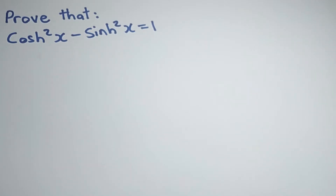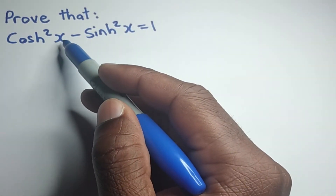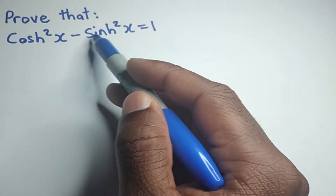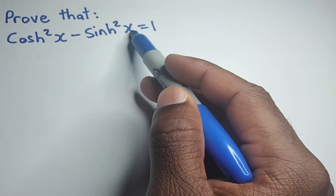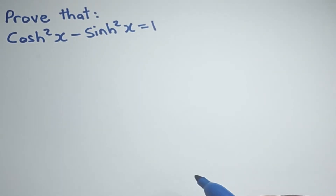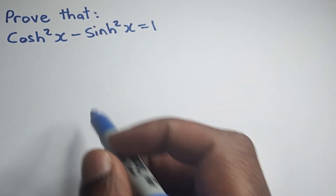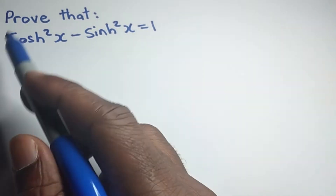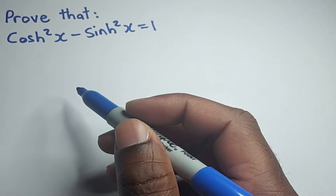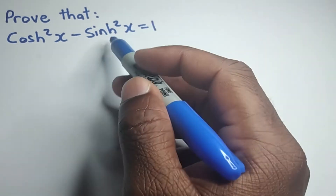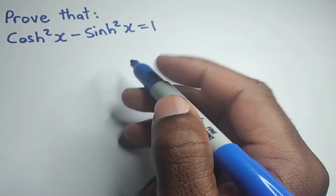So I want to prove that hyperbolic cos squared of x minus hyperbolic sin squared of x is equal to 1. But before we can do this, we need to recall the definitions for hyperbolic cos of x and hyperbolic sin of x.